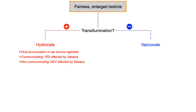Non-communicating hydroceles have no connection to the peritoneal cavity. The fluid that accumulates is derived from the tunica vaginalis. Basically, there's either over-secretion of fluid or the body does a poor job of resorbing it, and therefore it's likely to form the hydrocele.